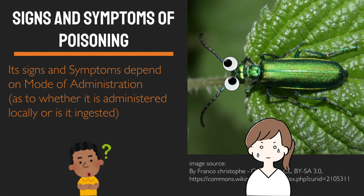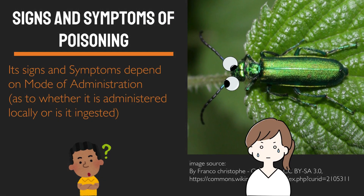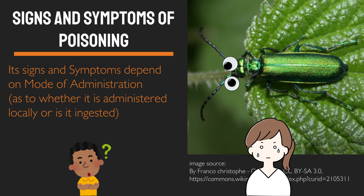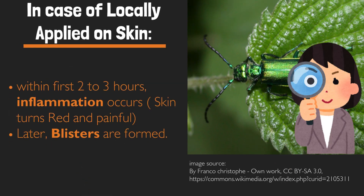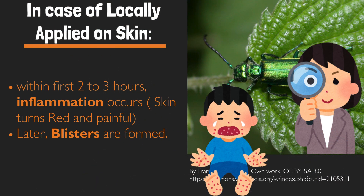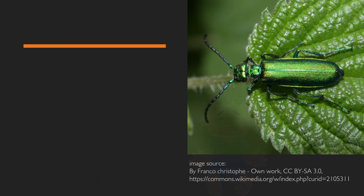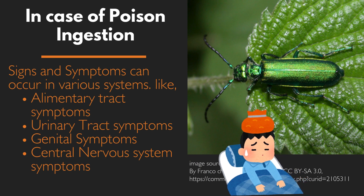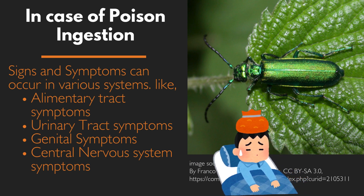Signs and symptoms of poisoning depend on the mode of administration — whether it is applied locally or ingested. In the case of local application on skin, within the first two to three hours inflammation occurs: the skin turns red and painful, and later blisters are formed. In case of ingestion, signs and symptoms can occur across various systems.